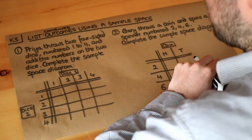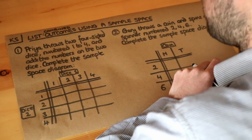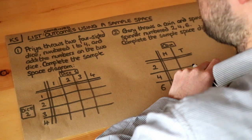So let's look at this first question here. Priya throws two four-sided dice numbered one to four and adds the numbers on the two dice. Complete the sample space diagram.